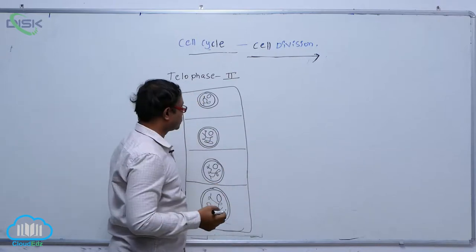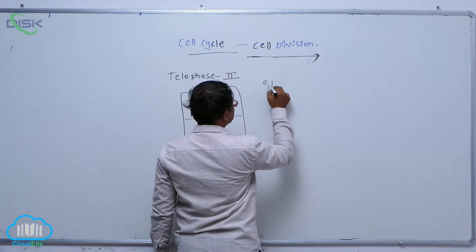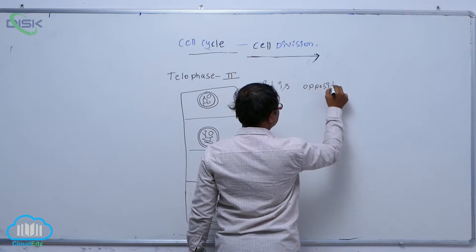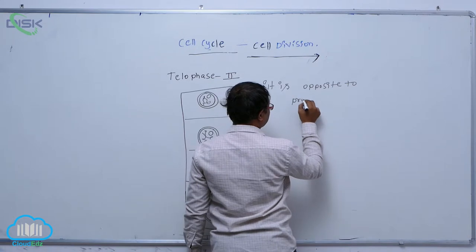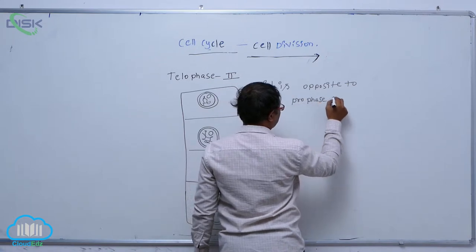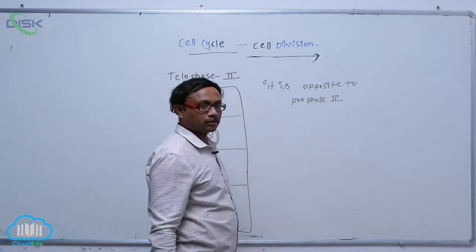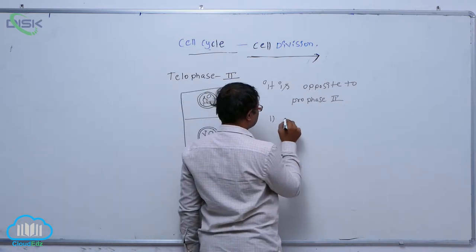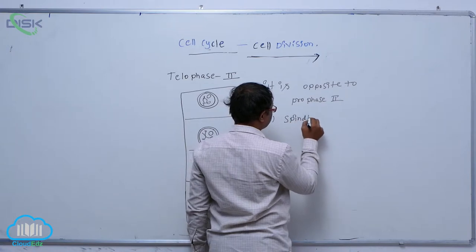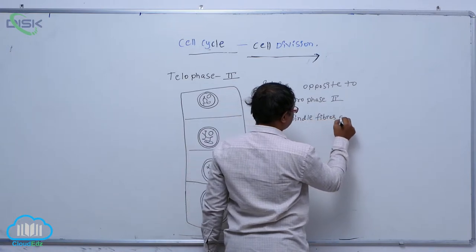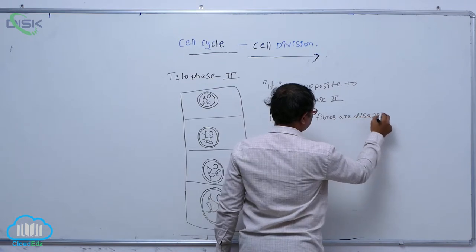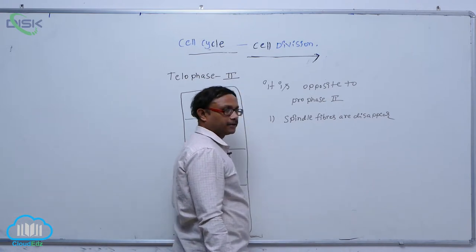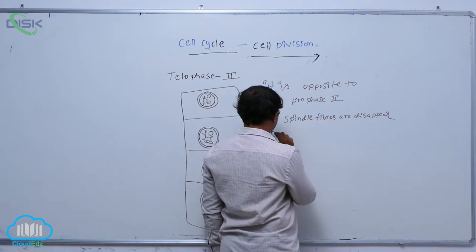Telophase II is similar to telophase I but opposite to prophase II. When chromosomes are moved towards the opposite poles, the first change that occurs is that spindle fibers disappear.